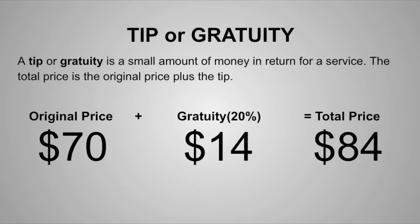The second topic is tip or gratuity. A tip or gratuity is a small amount of money in return for a service. The total price is the original price plus the tip. So as you can see, the original price was $70. There was a 20% tip, which calculated to $14. So when I add the original price and their gratuity, the total price is $84.